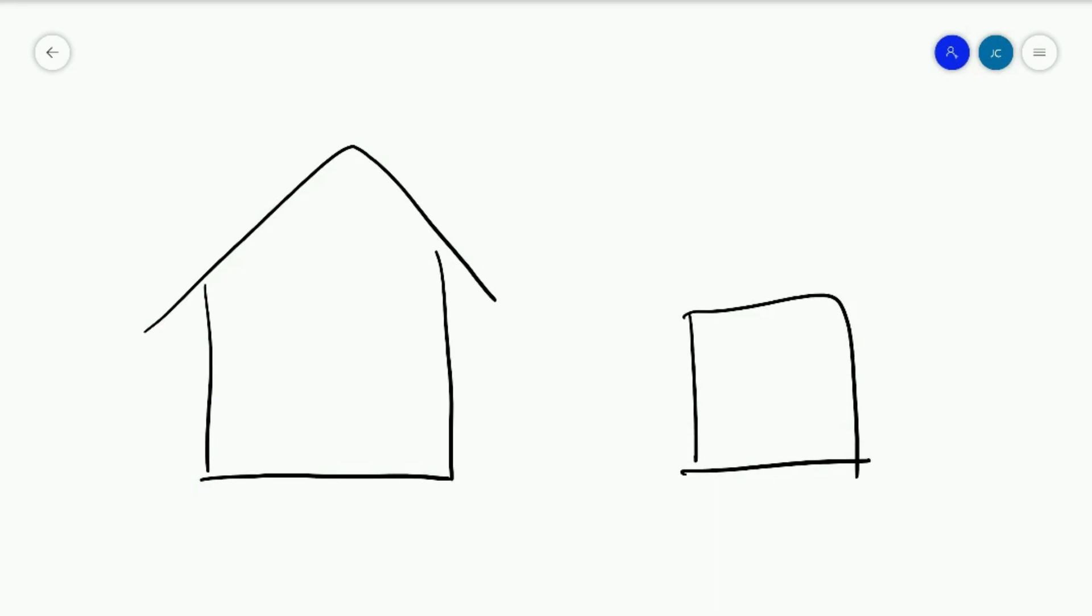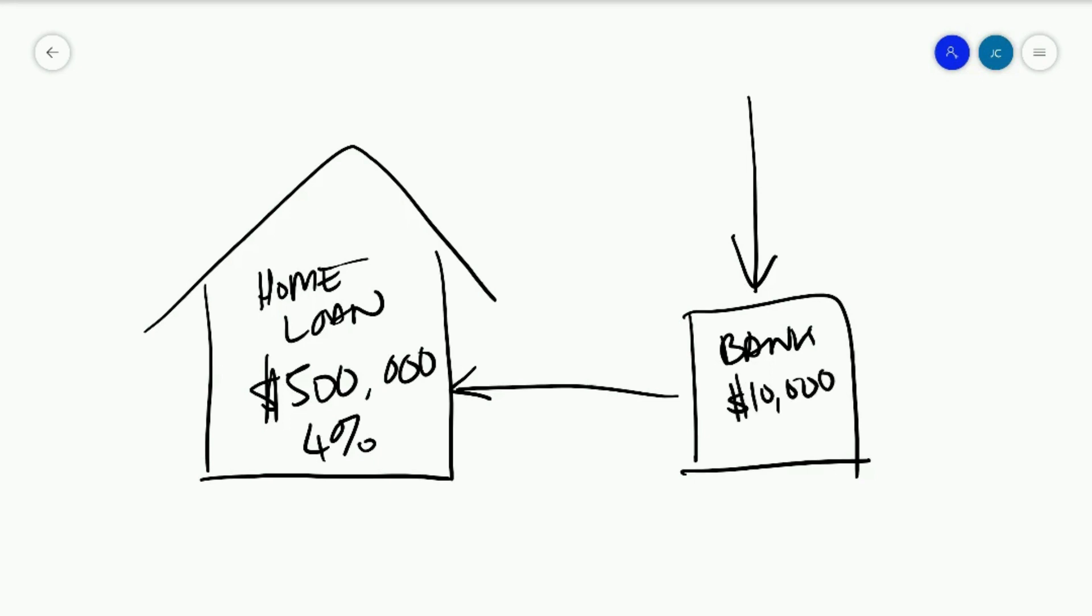And the most common way of paying down a house is money goes into a bank account and from that bank account the money then goes and pays off the mortgage. So let's say the home loan is worth $500,000 at an interest rate of 4%. And let's say the bank account has $10,000 in it and the bank pays 1%.